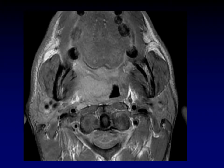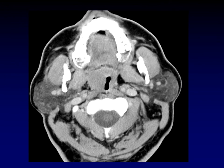This mass in the lateral pharyngeal space looks a little bit different — it's more uniformly enhancing. It still has the same relationship to the parapharyngeal fat, still pushing it out laterally, still in the lateral pharyngeal space. But this more uniform enhancement is perhaps a clue that we are dealing with lymphoma, the second most common tumor to arise in this space. Here's another example of lymphoma, again emphasizing the uniform enhancement as a clue that we're not dealing with squamous cell carcinoma.